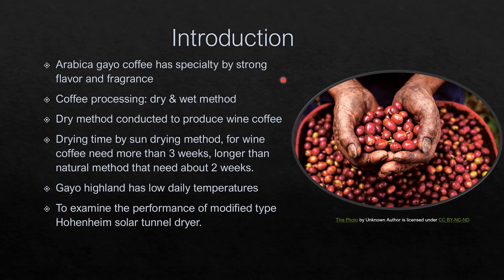We already know that Arabica Gayo coffee from Aceh has specialty and is well known worldwide. In coffee processing, there are about two methods that can be applied: the dry and wet method. The common method used by our farmers is the open sun drying method, through natural or dry method.